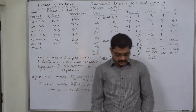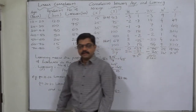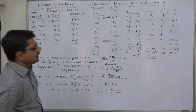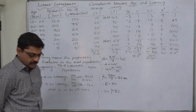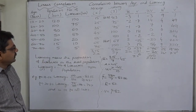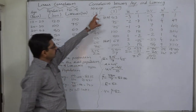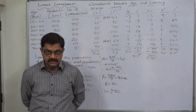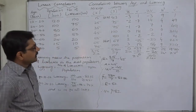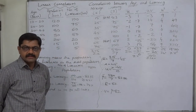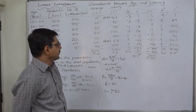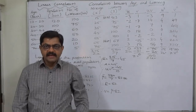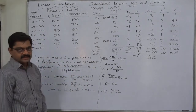Hello and welcome. This time we are going to study a special case in linear correlation — the case of correlation between age and literacy. There are two variables: age and literacy. Age itself is a statistical phenomenon that can be expressed through statistics directly.